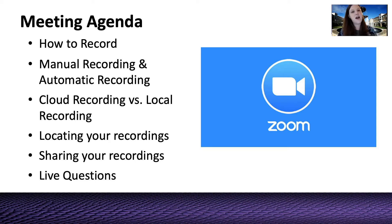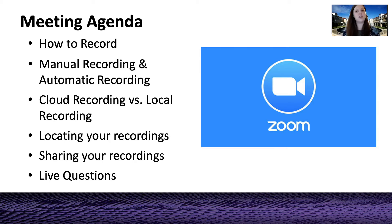The very first thing you want to make sure you've done is enabling recording as an option for your account. If you've been hosting Zoom calls and haven't seen the option to record, it's possible you don't have that feature turned on. This is a setting you need to go to the web portal to actually enable. When I say the web portal, I'm talking about the website tcu.zoom.us. Hopefully you've visited this website before, but if not, definitely check it out — you can do a lot from there.